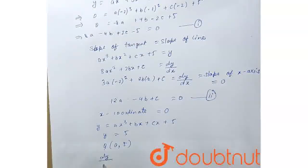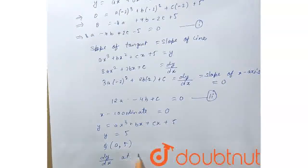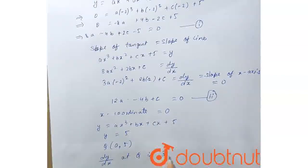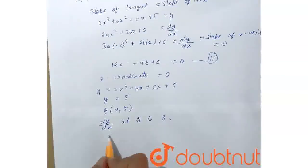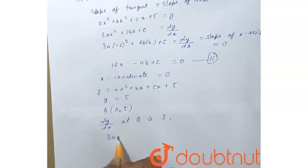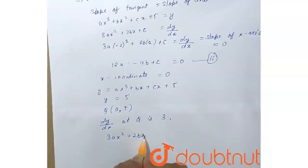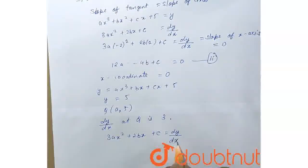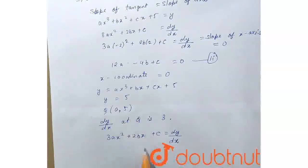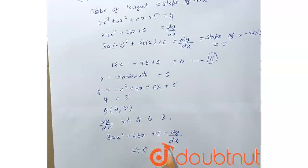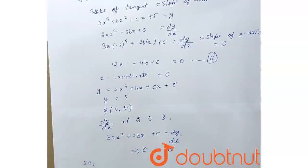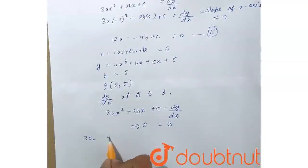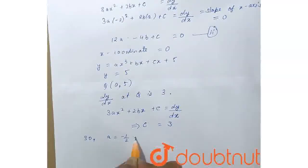And dy/dx at q is 3, it is given in the question. So differentiate the equation: 3x² plus 2bx plus c equals dy/dx. Put x equals 0, we will get c equals 3.